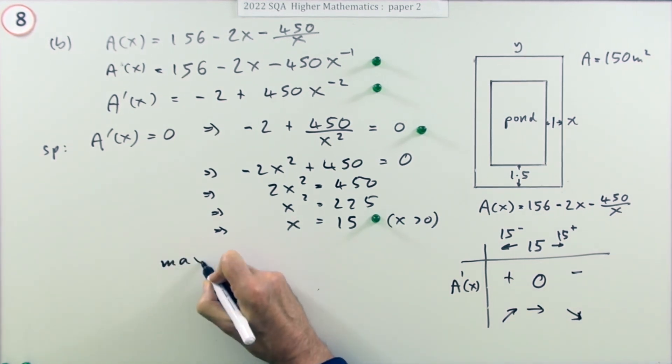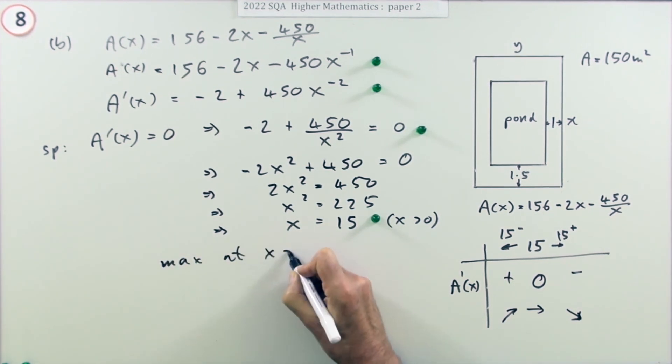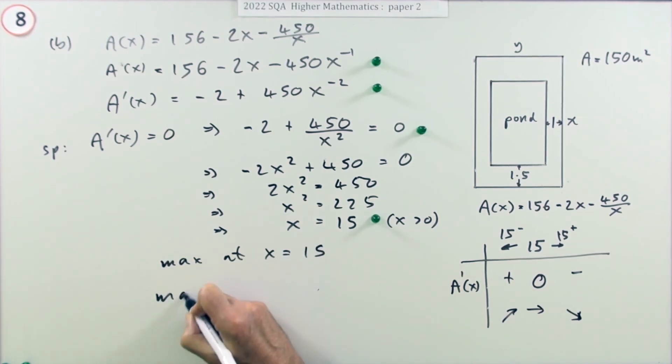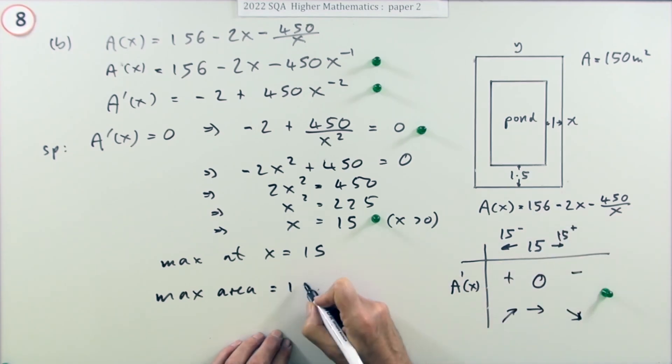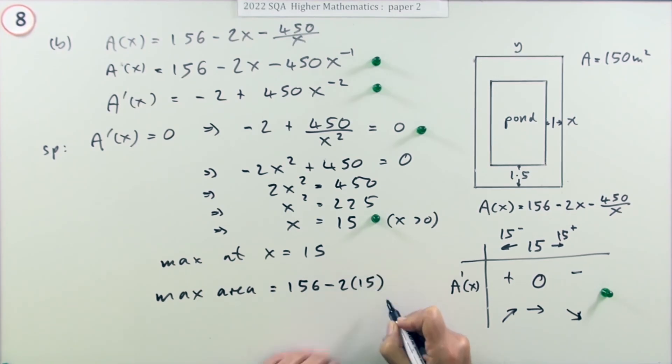So what you can say now is you've got a maximum at x equals 15. There's a mark for this table and that statement. The maximum area will equal: just put it into that formula now. 156 minus 2 times 15 minus 450 over 15. Well that's 30, that's also 30, 3 times 15 is 45, so that's minus 60, so that's 96 square metres for the final mark.